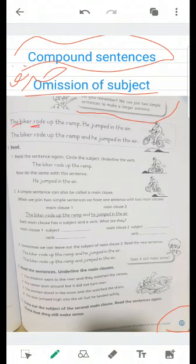Do you remember? We can join two simple sentences to make a longer sentence. Look at the first sentence. The biker rode up the ramp. He jumped in the air. Look at the second sentence, we have he. He is a pronoun referring to the biker. So both sentences are talking about the same subject. Can we write them in one longer sentence? Yes, of course.